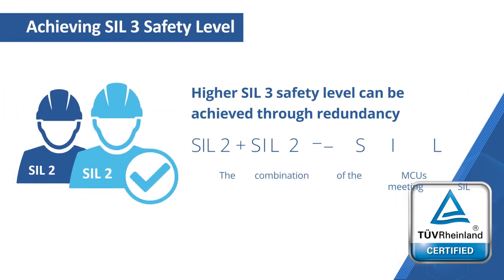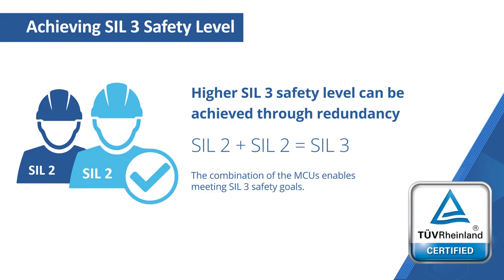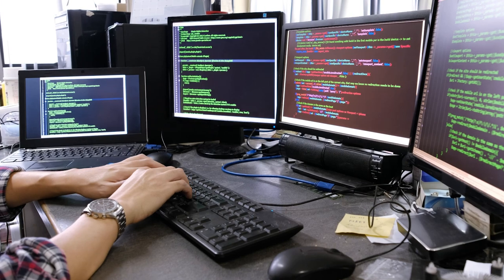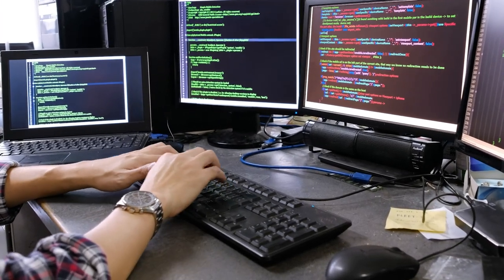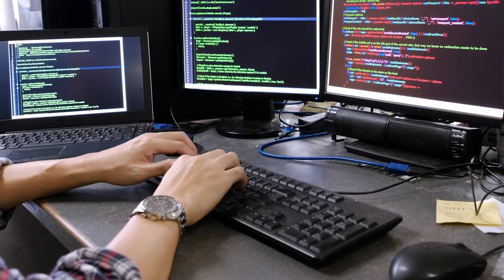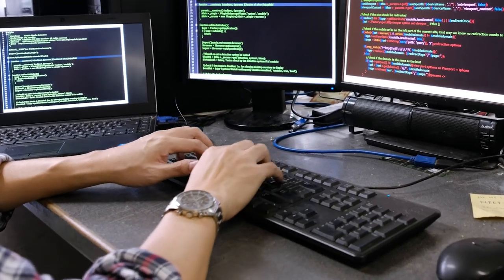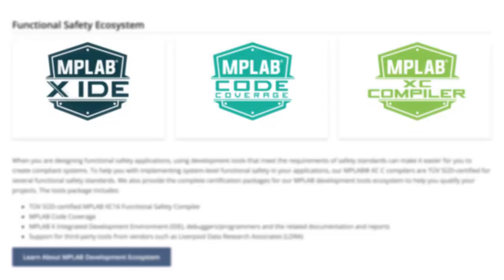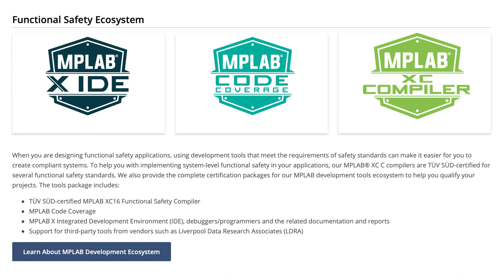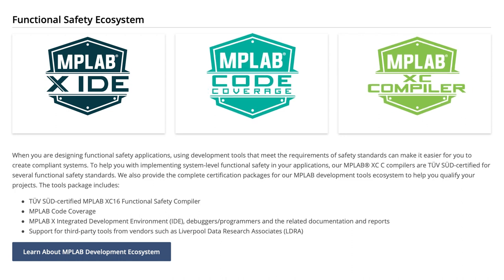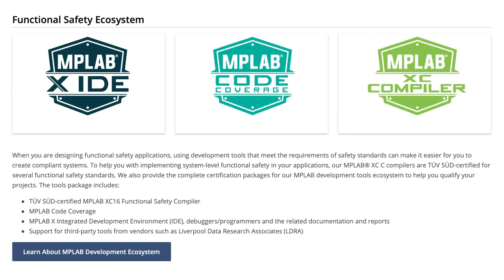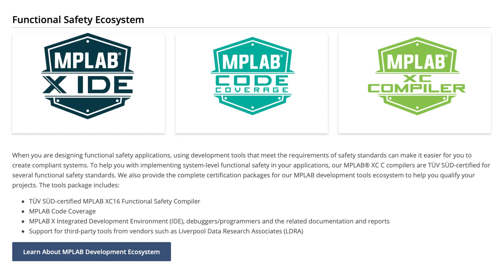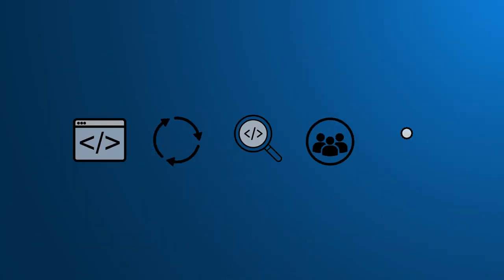Our certified development tools make it easier to qualify the tools used in your design. To help you with implementing system-level functional safety in your applications, our packages provide the documentation needed for functional safety qualification for the MPLAB development ecosystem. Our development ecosystem for functional safety consists of a TUVSUT certified MPLAB XC16 functional safety compiler, our MPLAB code coverage tool for quantifying how well the code is tested, documentation and reports for a fully qualified development environment, and support for third-party tools such as the Liverpool Data Research Associates or LDRA tool suite.